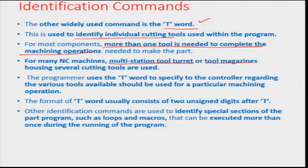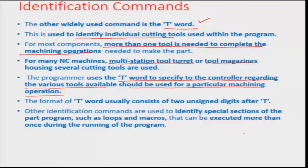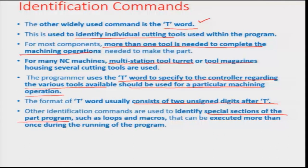The programmer uses the T word to specify to the controller which of the available tools should be used for a particular machining operation. The T word format usually consists of two unsigned digits after T. Other identification commands are used to identify special sections of the part program, such as loops and macros that can be executed more than once during the running of the program.